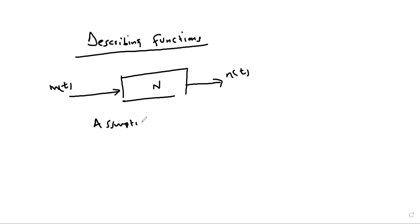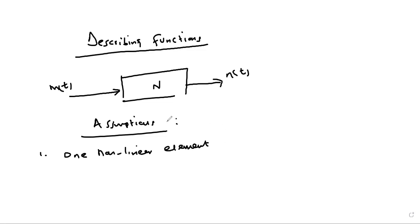Assumption one: there is only one non-linear element in the system. That is where we can analyze the behavior of the output, because we are subjecting our system to only one non-linearity at a time. Assumption two: the non-linearity component is time-invariant — it does not change with time. If it is a saturation non-linearity, it remains saturation from t equals zero to infinity.